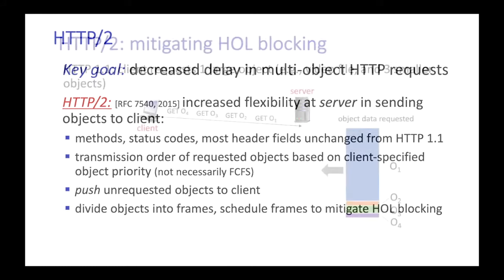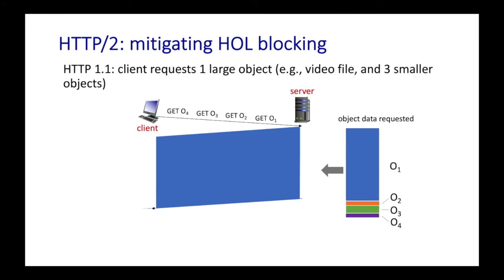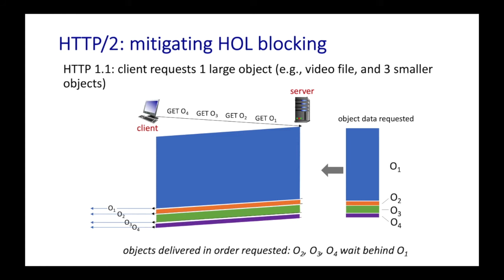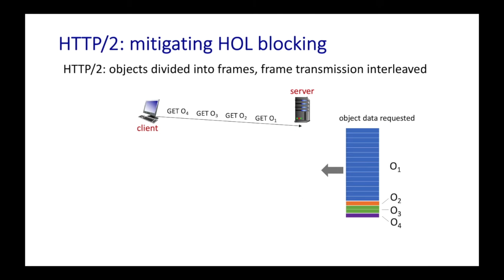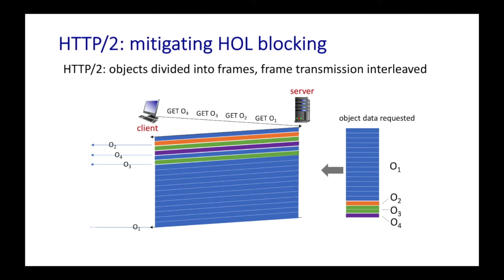Let's look at what head-of-line blocking is. In HTTP 1.1, a client requests one large object — say a video file — and then three smaller objects. The objects are transmitted first-come-first-served, so the large object is transmitted first and takes a long time, while objects 2, 3, and 4 have to wait. This is like being stuck behind someone with a huge loaded cart at a supermarket checkout when you just have a loaf of bread. In HTTP 2, large objects are divided into frames, and frame transmissions can be interleaved, so smaller objects 2, 3, and 4 are delivered quickly while object 1 is only slightly delayed, giving better overall performance and lower average object delay.